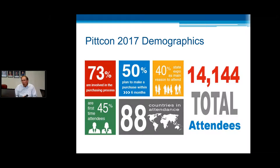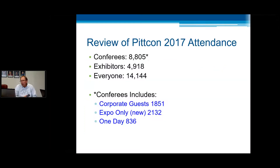So we have a high proportion of new attendees attending the conference each year, and we're getting very steady and consistent participation from overseas. 88 countries were represented amongst our attendees. The total attendees was 14,144, which was actually an increase — especially over Atlanta — so we were very happy to see that growth in attendance in Chicago. To break those numbers down: of that 14,144, just a little bit shy of 9,000 were conferees and a little bit shy of 5,000 were exhibitors — approximately a 2-to-1 ratio.